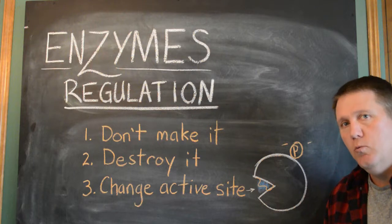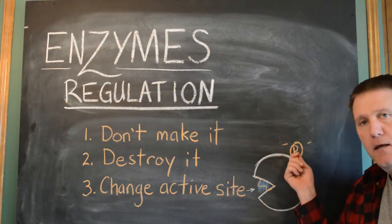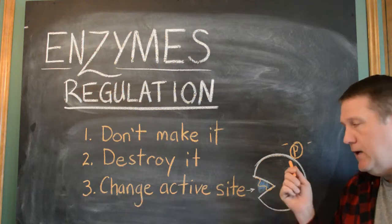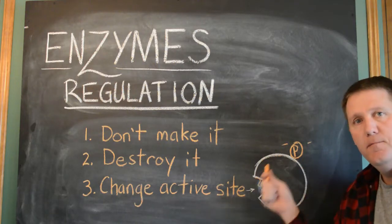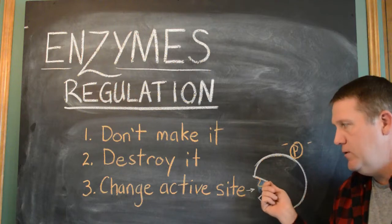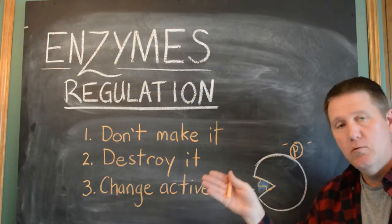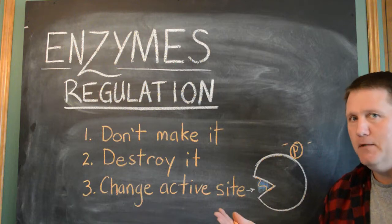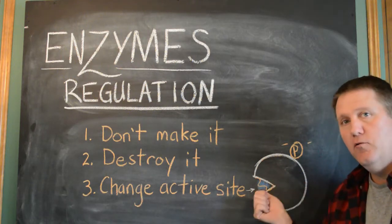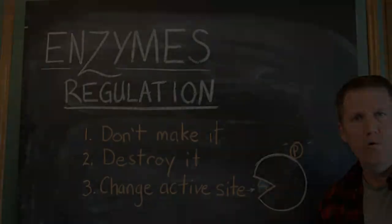Different enzymes operate differently in this regard. Some are activated by adding a phosphate, and others are turned off by adding a phosphate. But either way, this gives us the ability to basically say, 'Enzyme, go!' or 'Enzyme, stop!' — really handy for a powerful little tool that you want to be able to control.